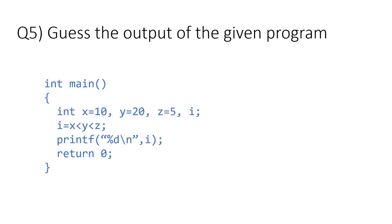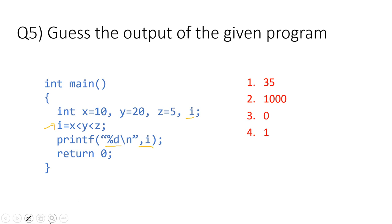Now for the last question of this video: guess the output of the given program. You have int x equal to 10, y equal to 20, z equal to 5, and another variable i. In the next line, i is equal to x less than y less than z, and then the value of i is printed. The options are 35, 1000, 0, or 1.